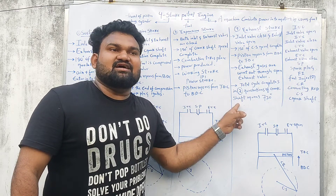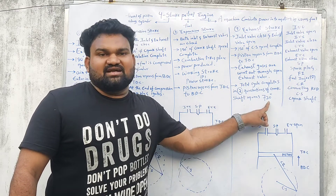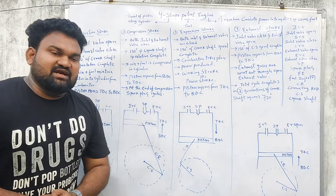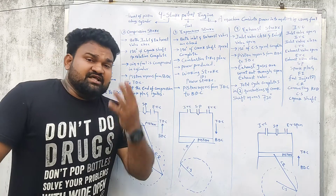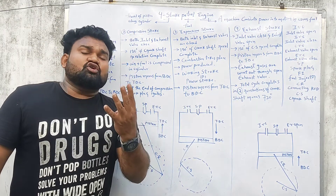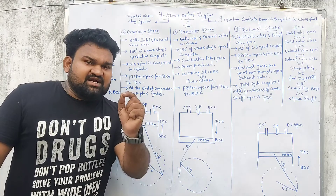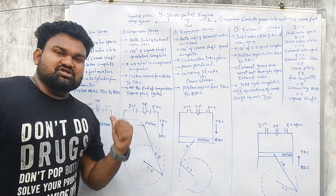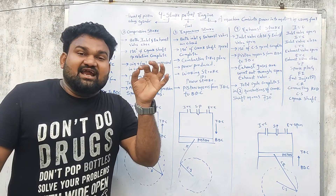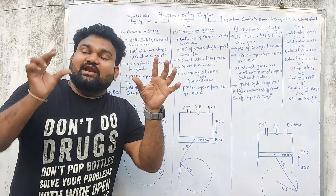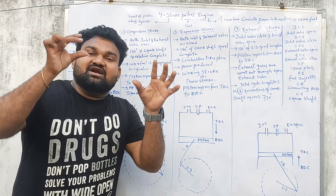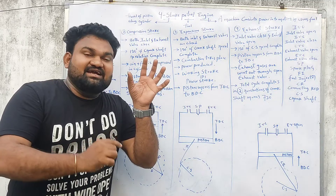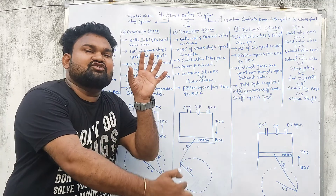Two revolutions of the crankshaft equals 720 degrees. Let's repeat again, my dear students. There are four strokes in a four-stroke petrol engine. The first is the suction stroke. The inlet valve is open, and the air plus fuel mixture enters the cylinder.